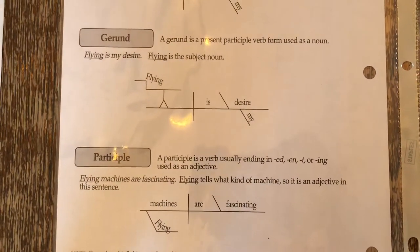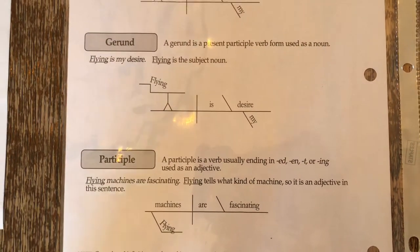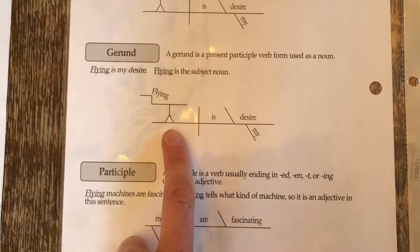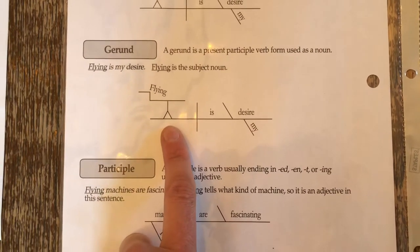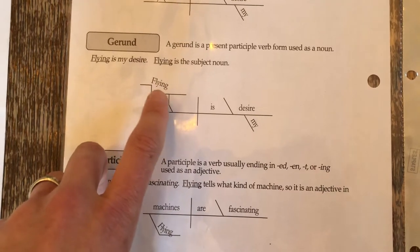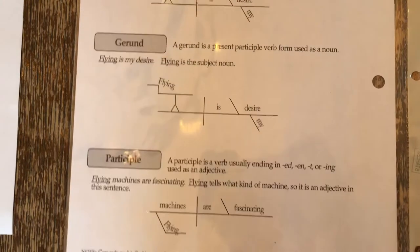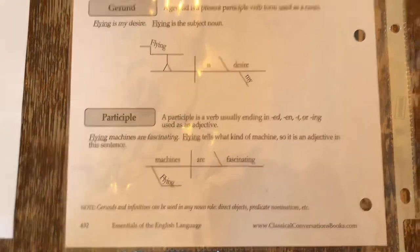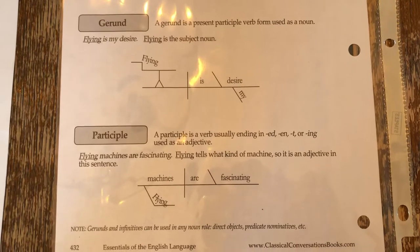Our example here is: flying is my desire. Flying is the subject noun. This is what our diagram looks like — it's on stilts, almost like a stair step on stilts with flying written at a slant. So, flying is my desire. We had to know what a participle was to identify a gerund because a gerund is a present participle.